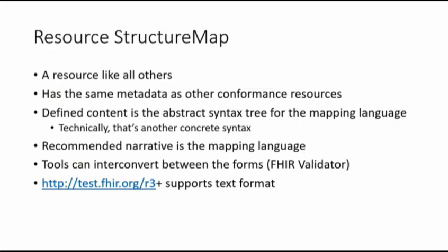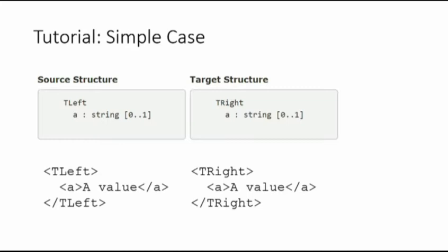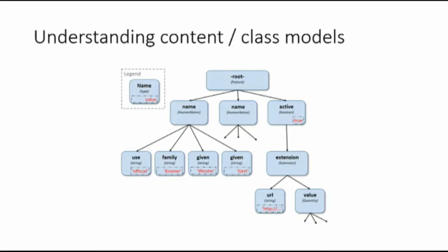I'm going to give you a sense of how the language works using abstract generic trees rather than FHIR resources. On the left I have a structure named 'left' with A, which is a string. On the right, A is also a string. This is essentially a null transform — the simplest case. We want to take 'left' and convert it to 'right.' The framing sets up the language: we say we're going to map from one source to the other. Then we declare a group of mappings that take a source and target as input.